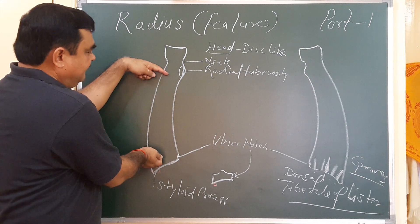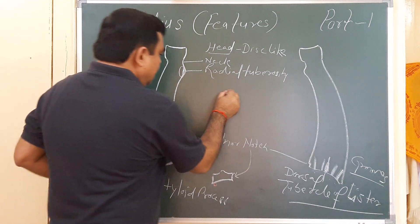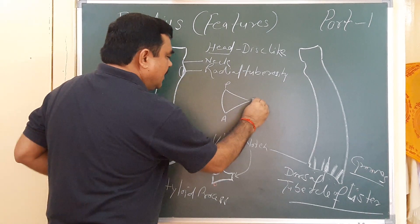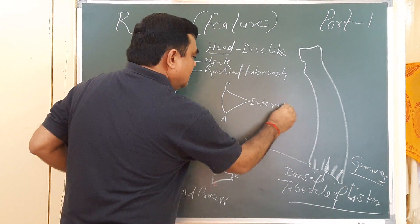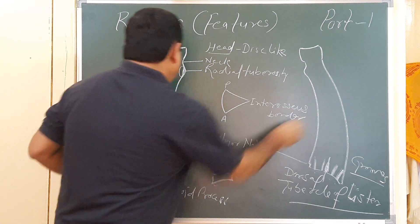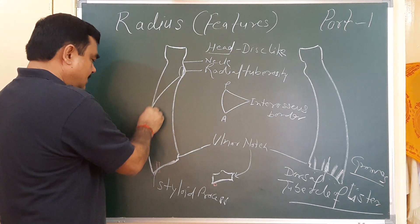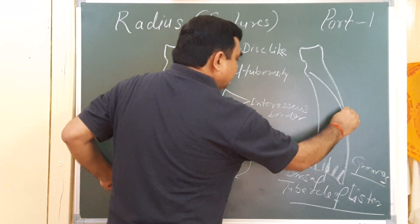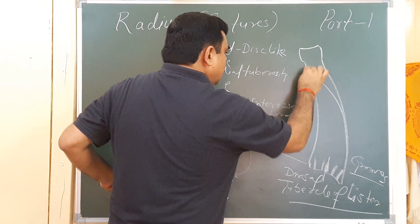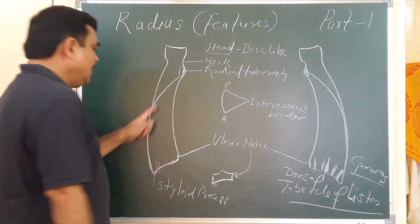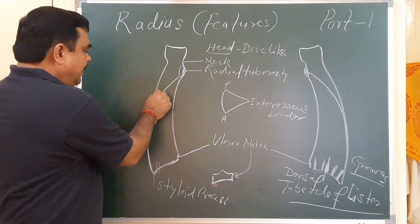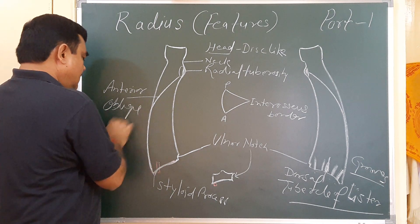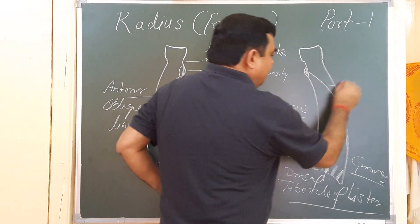From here to here is the shaft. If you cut a cross-section, the shaft has an anterior border, posterior border, and interosseous border. The anterior border — its upper part is oblique, known as the anterior oblique line. The posterior border has a rough part, and there is also a posterior oblique line.